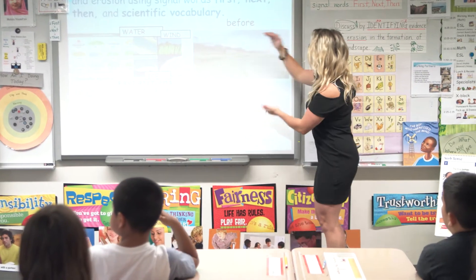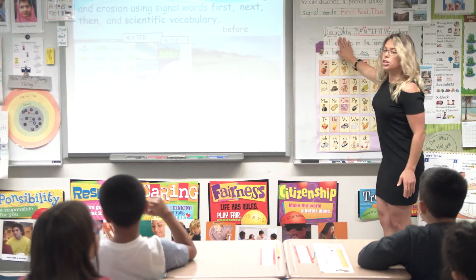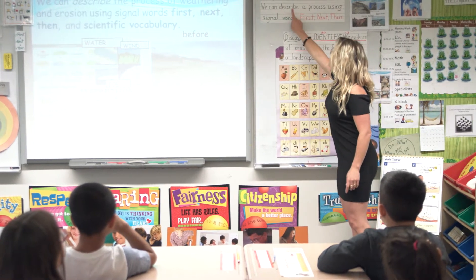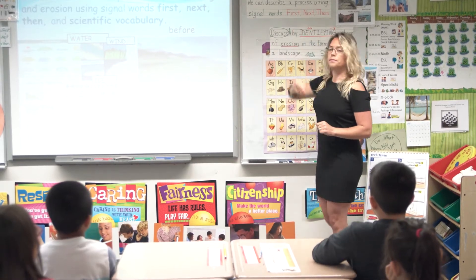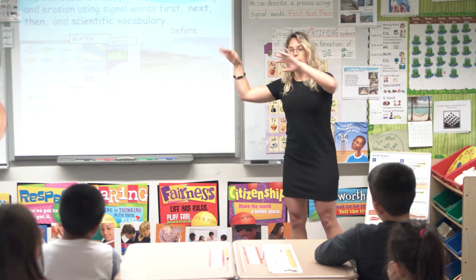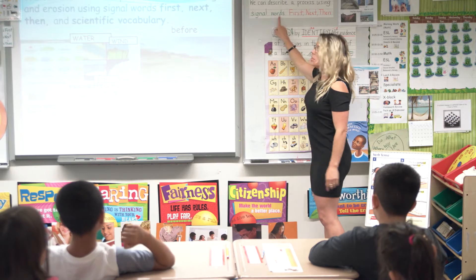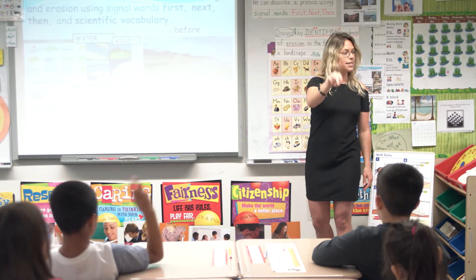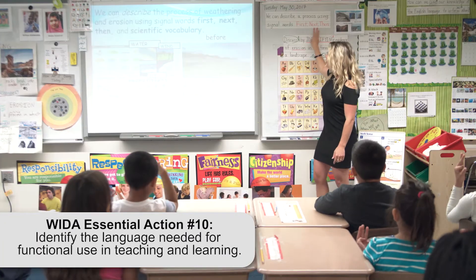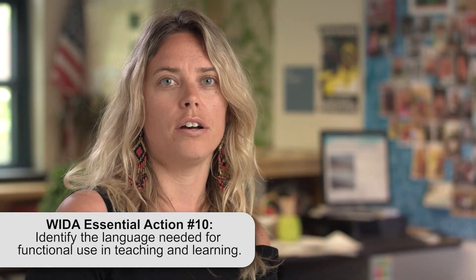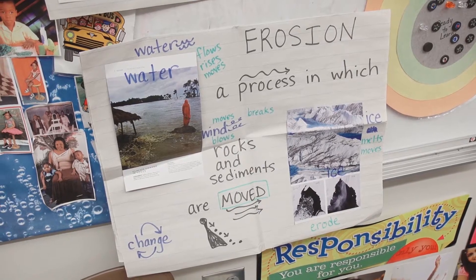Now we're going to apply it to today's job. Our job is posted right here. Today we are going to describe a process — like weathering and erosion — by using these signal words: First. Next. Then. The language objective for today's lesson was to be able to describe the process of weathering and erosion using sequential language and scientific vocabulary as well as comparative adjectives.